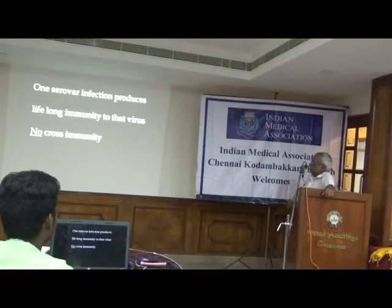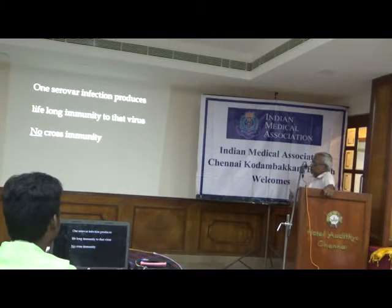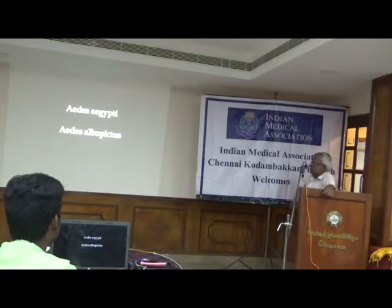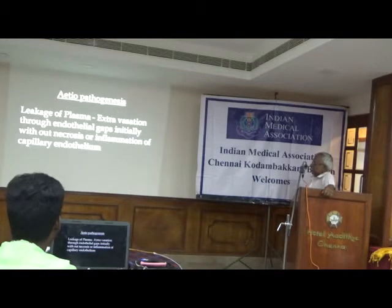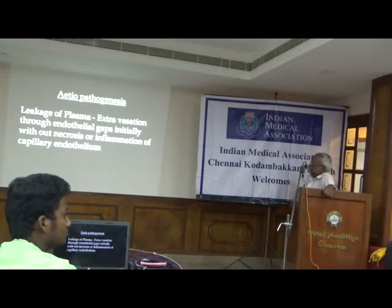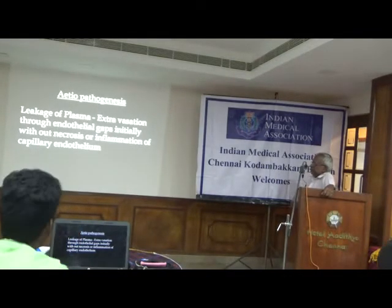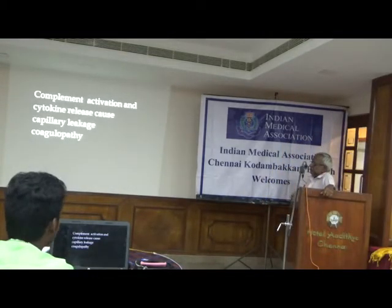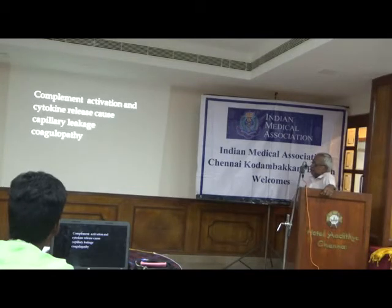Flaviviridae is the family that produces dengue fever and there are 4 serovars. Each serovar infection produces lifelong immunity to that virus but no cross-immunity to the other 3 serovars, and hence a person can get dengue again and again. Transmission is via Aedes aegypti and Aedes albopictus. Etiopathogenesis involves leakage of plasma through endothelial gaps initially without necrosis or inflammation of the capillary endothelium. Complement activation and cytokine release cause capillary leakage and coagulopathy.